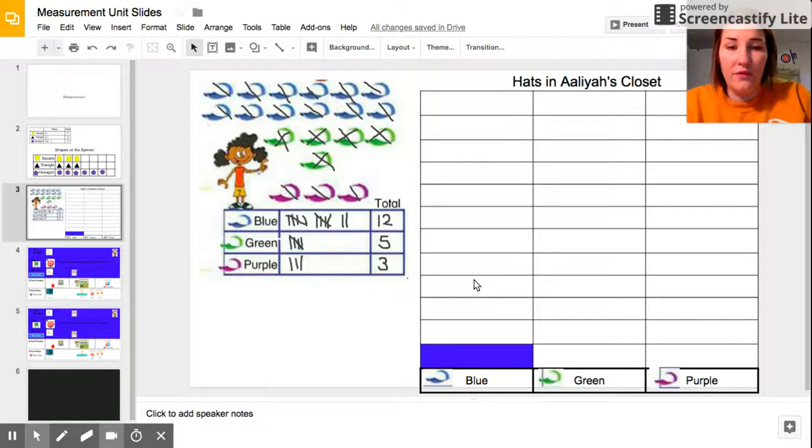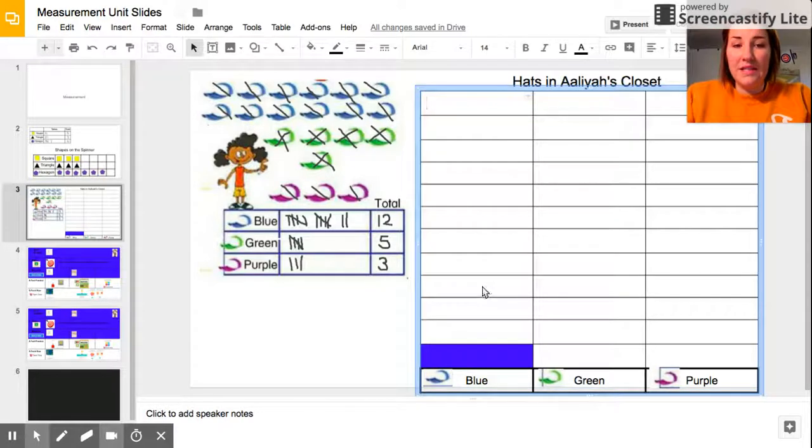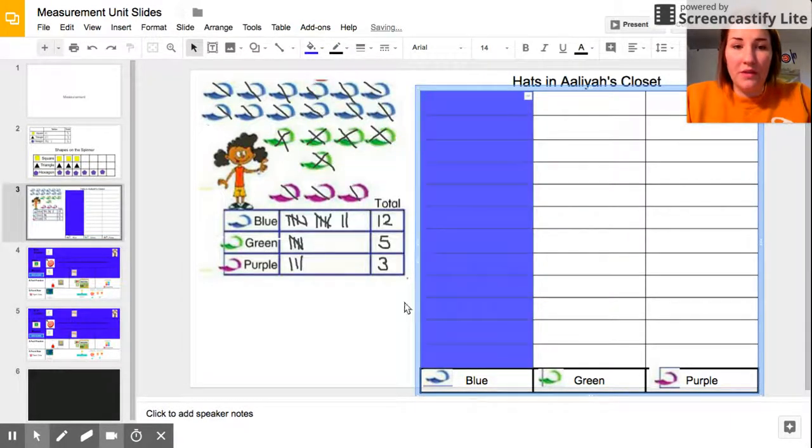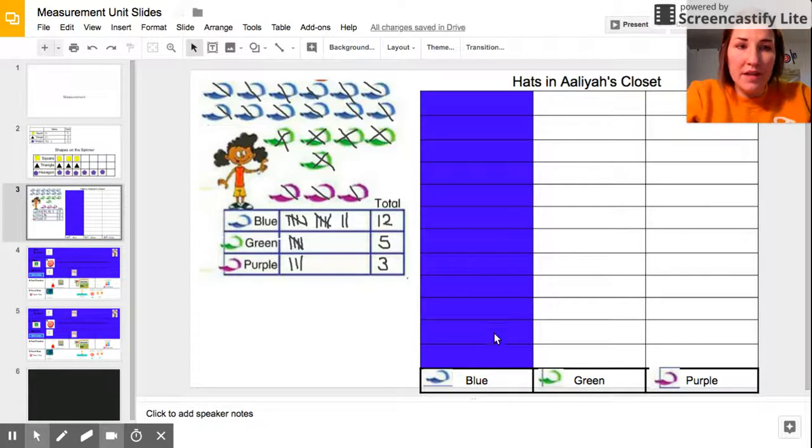I can do that one by one or I can count up to see how far I need to color. So 1, 2, 3, 4, 5, 6, 7, 8, 9, 10, 11, 12. I would need to color in all of those spaces. I'm going to color them in blue because remember, each rectangle within my graph is going to represent one hat that we found in the closet.